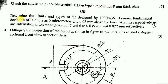Or alternatively: Determine the limits and types of fit designed by 100H7/g6. Assume fundamental deviation of H and S as 0 micrometer and 0.035mm above the basic size line respectively, and international tolerance grade for 7 and 6 as 0.035mm and 0.022mm respectively. This is about the table of fits, which is in Chapter 3.